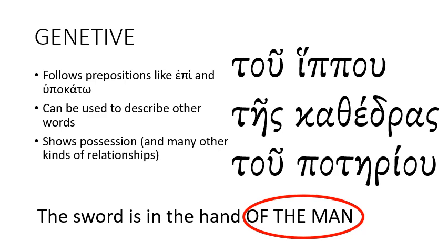The genitive case is used after prepositions like 'epi' and 'ipokato', but is more frequently used as a way to connect two words where the second word describes the first. For example, 'poterion idatos' — 'idatos', meaning 'of the water', is in the genitive case. So 'poterion idatos' is a glass of water, not a glass of milk or wine, but a glass of water.